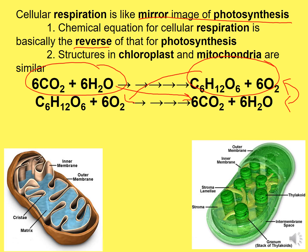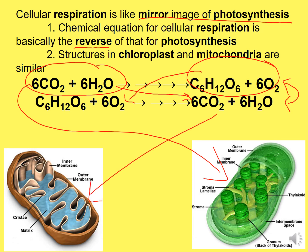Remember, chloroplasts and mitochondria are very similar. Plants use chloroplasts and we use mitochondria. The chloroplast has fluid called stroma; we have fluid in our mitochondria called matrix. Chloroplasts have stacks of membranes called thylakoids or grana; we have folds called cristae. Both have a membrane.